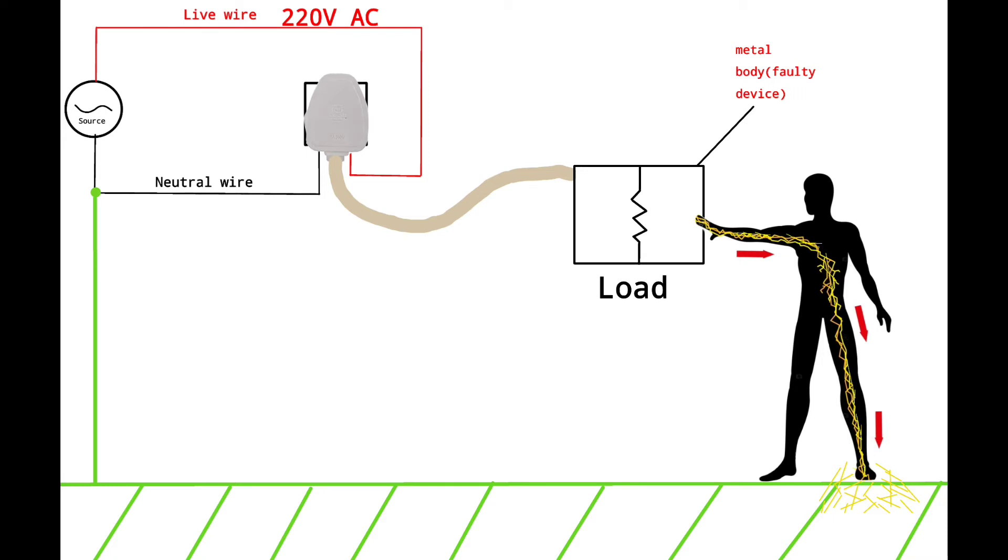If the man would stand on a plastic chair and touch the device, then he would not get electrocuted because he disconnected the circuit. Current flowing path is out of contact, so the man won't feel shock. Similarly, in case of birds this happens also.